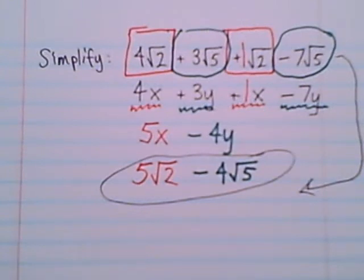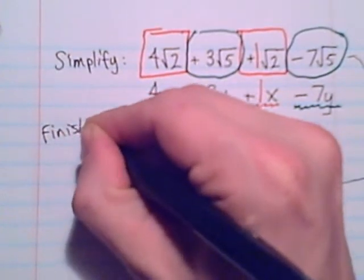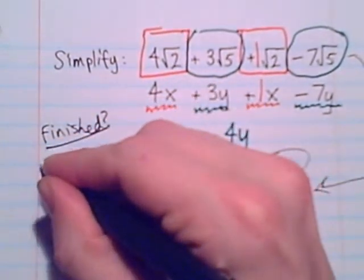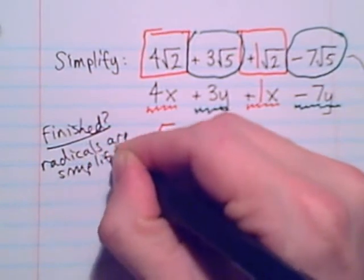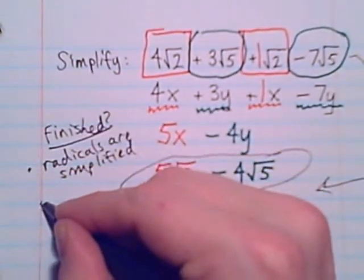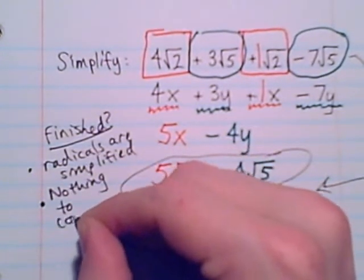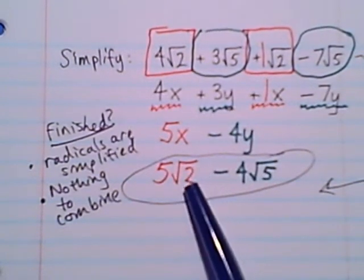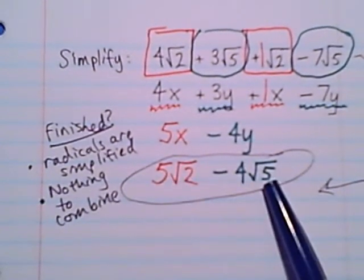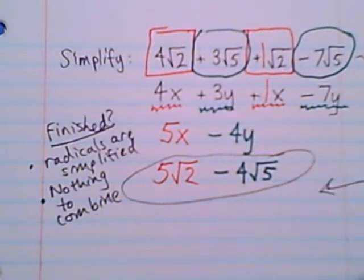So there's our simplified radical expression, 5 radical 2 minus 4 radical 5. And you may start thinking to yourself, well, how do I know that this problem is finished? And two things you should think about to answer this question about am I finished. You want to make sure that all radicals are simplified. And you want to see that there are no like radicals that you could combine. So I know that I'm not finding any pairs of factors inside of a 2 that I could bring out of a radical to simplify that. Same thing with a 5. So I don't have like terms that I could combine, and both radicals are simplified, so I must be finished.